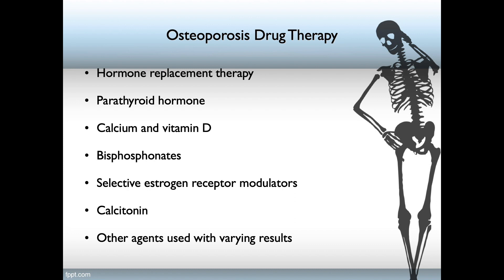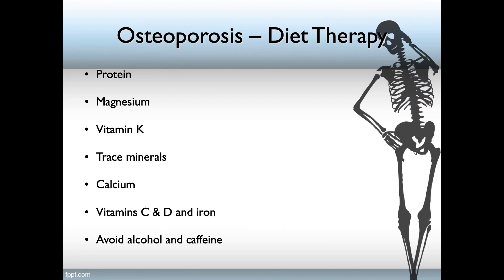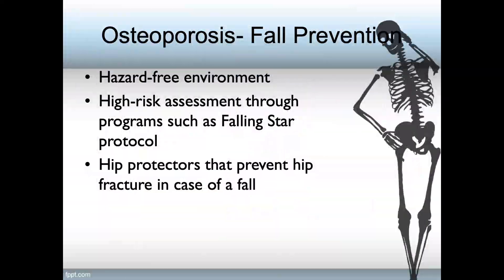As far as diet therapy, make sure the patient is aware of their protein intake. Since calcium is primarily transported by protein, protein is very important. However, you can't have too much protein. Other things to look for are magnesium and vitamin K, other trace minerals, calcium, vitamin C, and D supplements with iron, and avoiding alcohol and caffeine. Remember that the promotion of a single nutrient will not prevent or treat osteoporosis — it has to be an entire dietary lifestyle change.